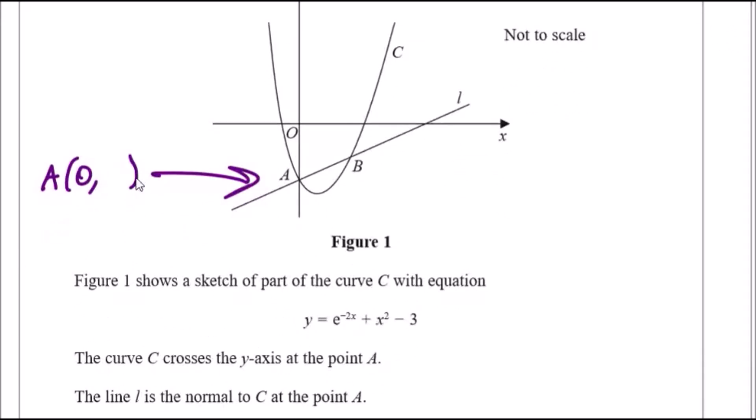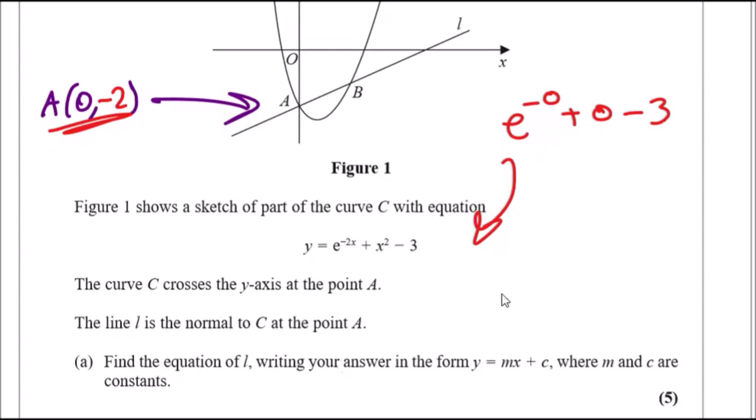Now to find the y-value, just plug in the value of zero into either equation of the curve or the line. Because we have the curve equation, replace x with zero. You're going to have e to the negative zero, so e^0 plus zero minus three. E^0 is one, so one minus three gives us negative two. That's the coordinate of A.